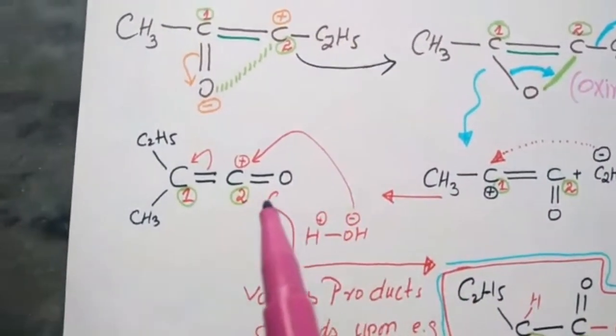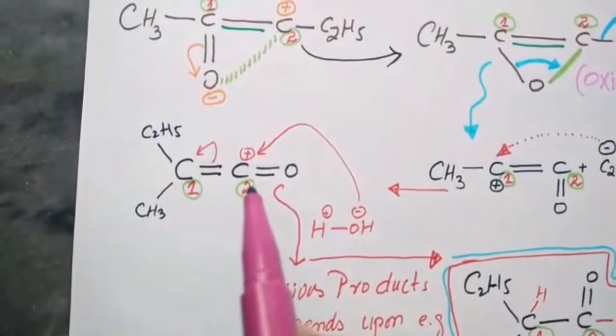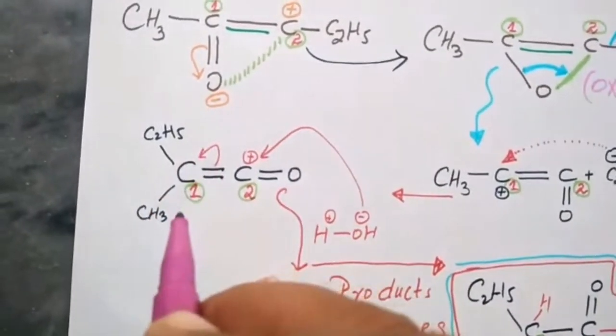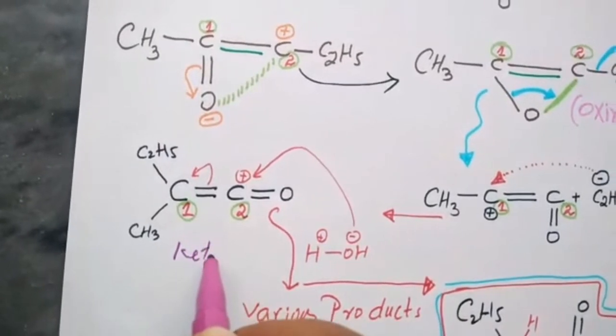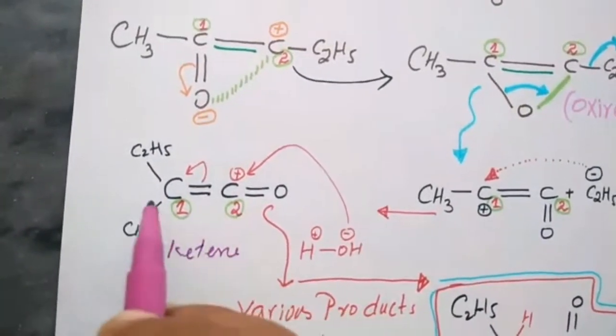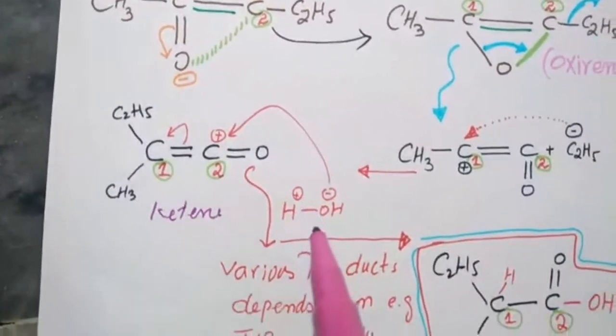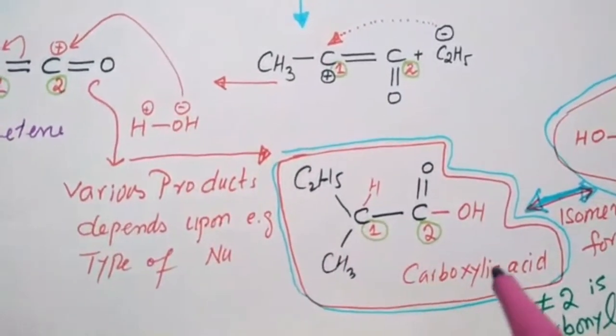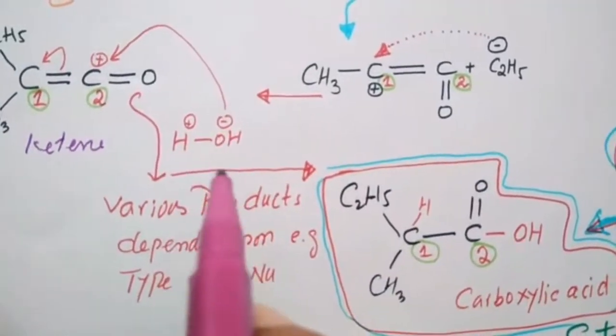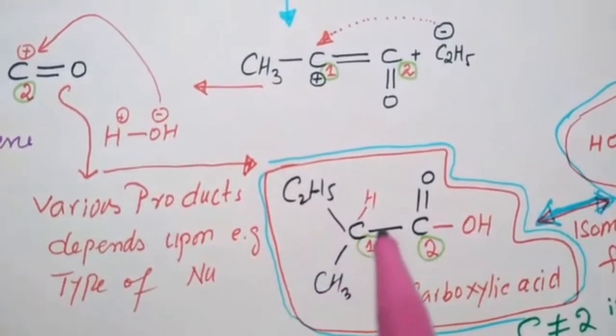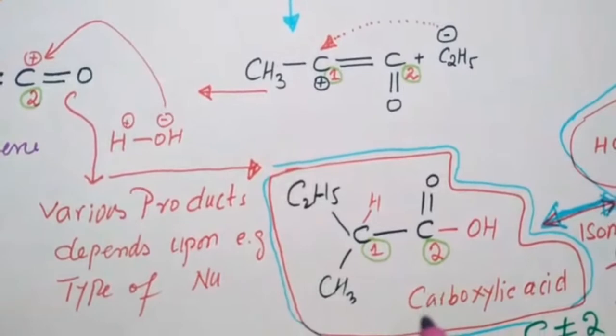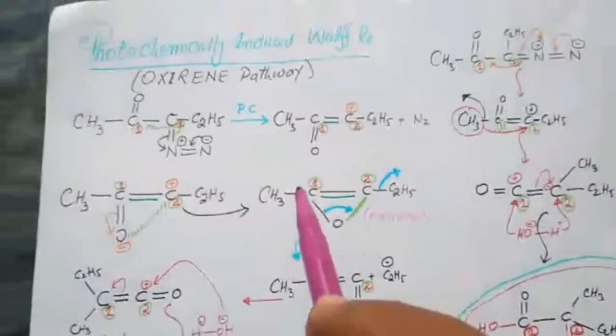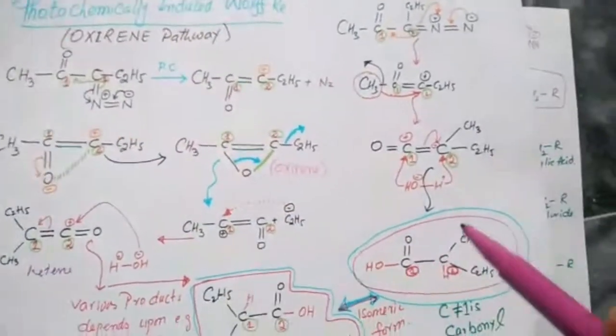So this is known as ketene. Now this ketene is a highly reactive product. From this we can make thousands of products. If, let's suppose, nucleophile is water, then on carbon one there will be ethyl, methyl, hydrogen, and on carbon two there will be carbonyl carbon.